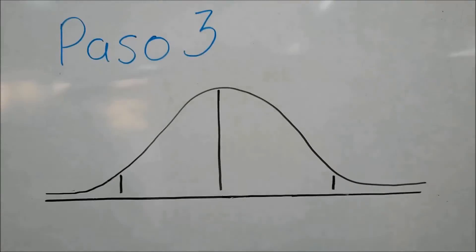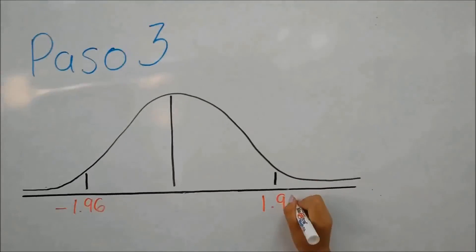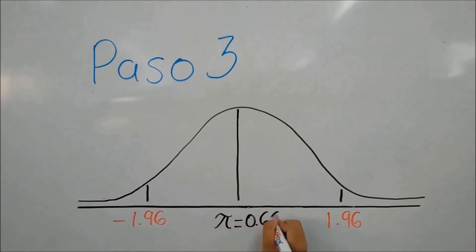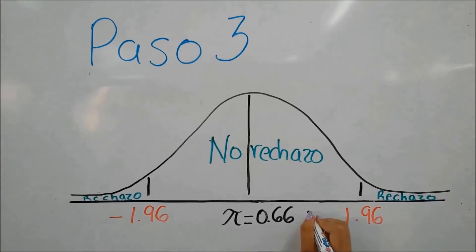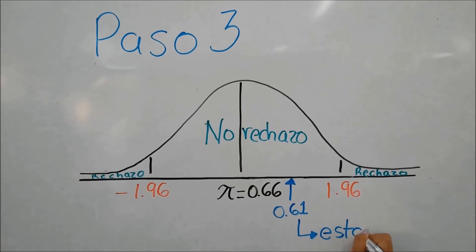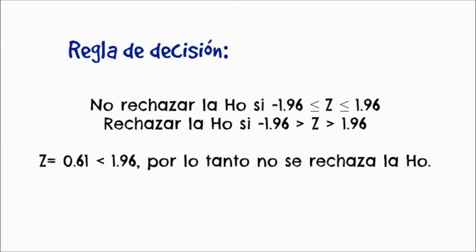Paso 3: señalamos en nuestro gráfico de la prueba bilateral los valores de los puntos críticos, en nuestro caso ±1.96, porque estamos utilizando un nivel de confianza del 95%. Posteriormente, colocamos nuestro estadístico de prueba y escribimos nuestra regla de decisión: no rechazar la hipótesis nula si Z es mayor o igual que -1.96 o menor o igual que 1.96; rechazar la hipótesis nula si Z es menor que -1.96 o mayor que 1.96. Z es igual a 0.61, esta Z es menor a 1.96, por lo tanto no se rechaza la hipótesis nula.